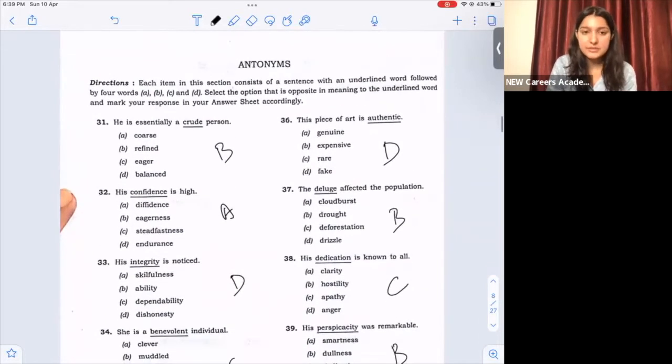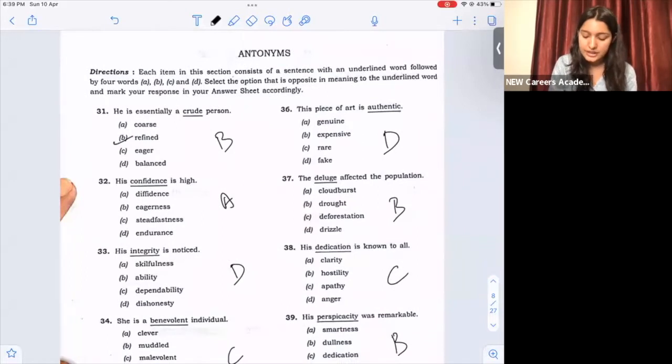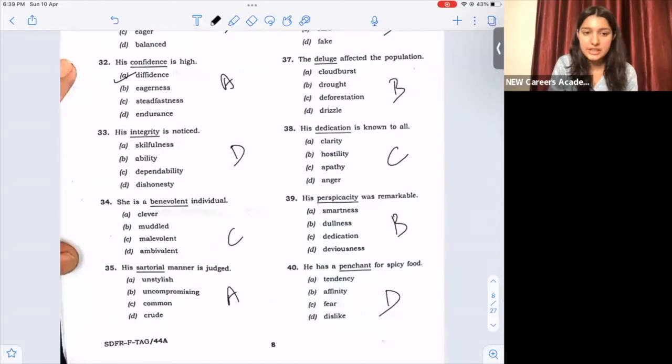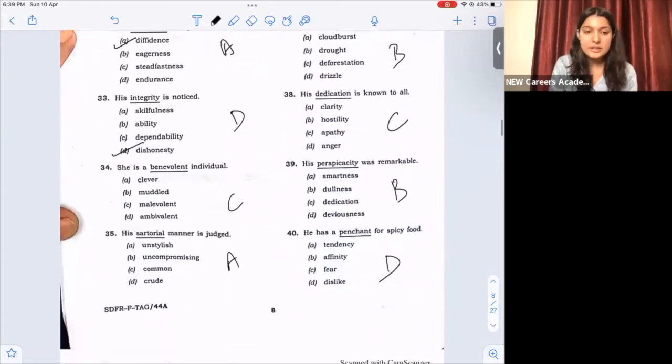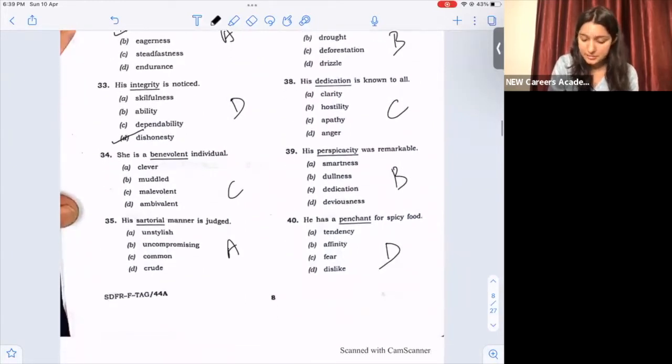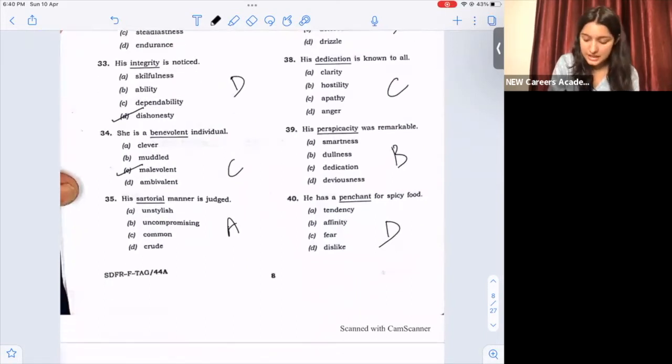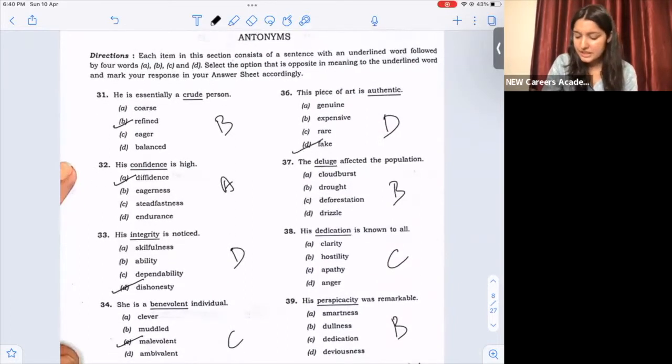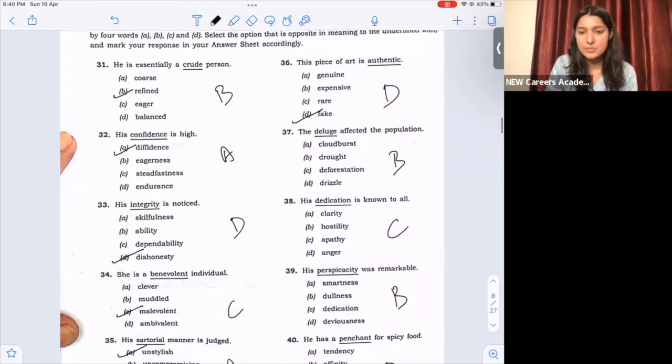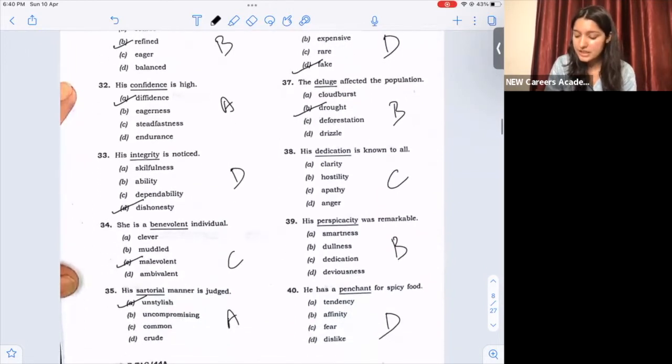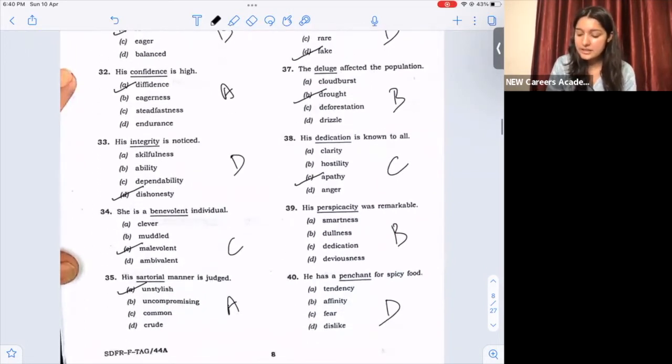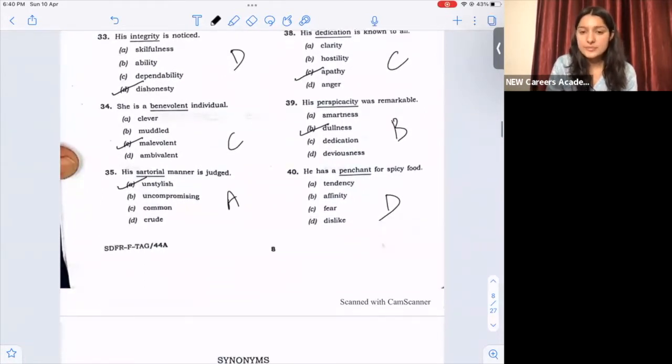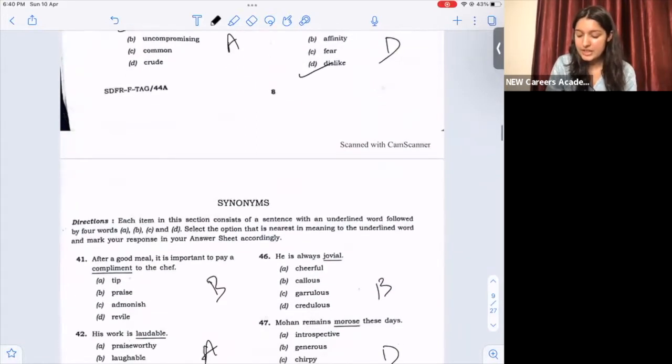Next, synonyms. Question number 41, option C, honest honesty. 34, option C, malevolent. 35, option A, unstylish. 36, option D, fake. 37, option B, drought. 38, option C, apathy. 39, option B, dullness. Question number 40, option D, dislike.